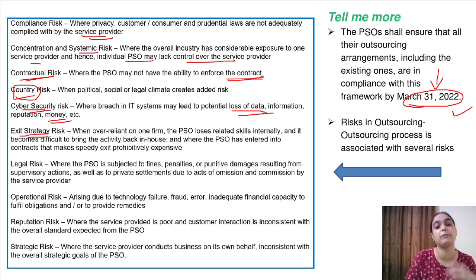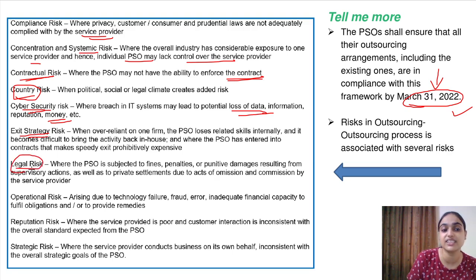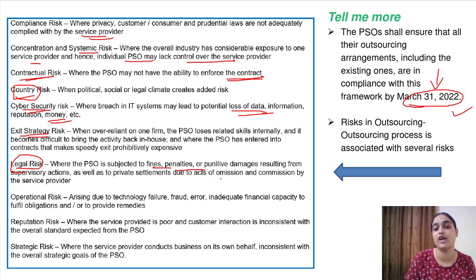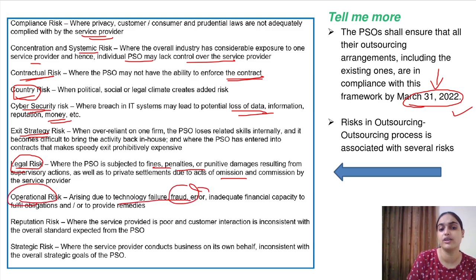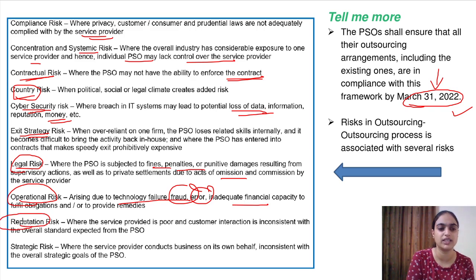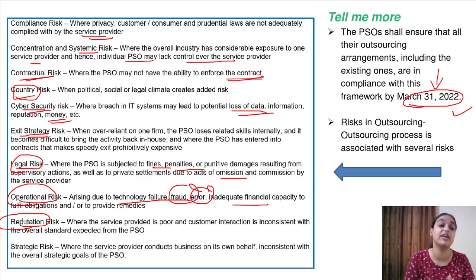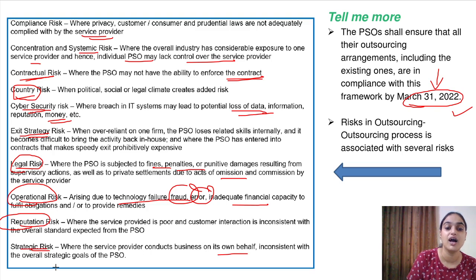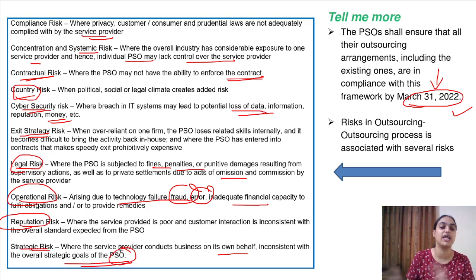Then there is exit strategy risk — you might be highly dependent on the service provider, making it very difficult to exit and become self-dependent. Legal risks include fines and penalties that might be imposed if the service provider fails to adhere to necessary norms. Operational risks may arise due to technology failure, fraud, error, or inadequate financial capabilities of the service provider. Reputation risk arises if the third party doesn't follow certain standards or provide quality services, harming customer satisfaction. Finally, strategic risk occurs where the service provider conducts its own business inconsistently with the overall goals of the PSO.